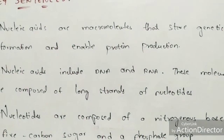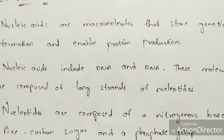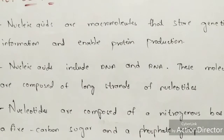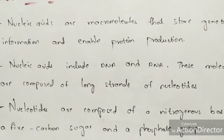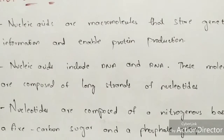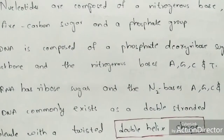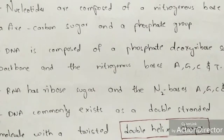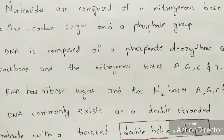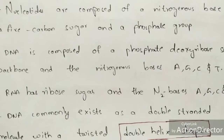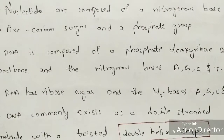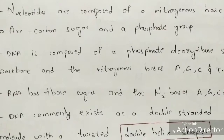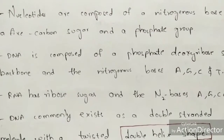Key points: Nucleic acids are macromolecules that store genetic information and enable protein synthesis. Nucleic acids include DNA and RNA, composed of long strands of nucleotides. Nucleotides consist of a nitrogenous base, a 5-carbon sugar, and a phosphate group. DNA has deoxyribose sugar with bases A, G, C, T; RNA has ribose sugar with bases A, G, C, U.